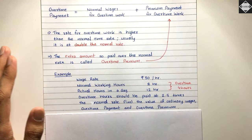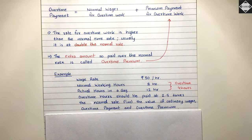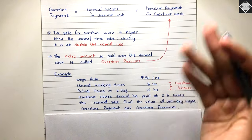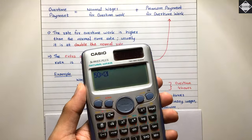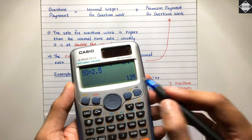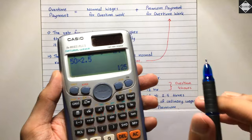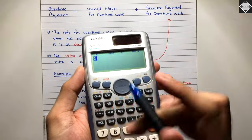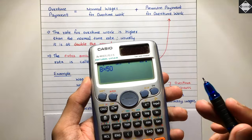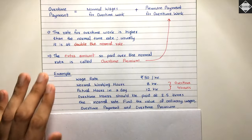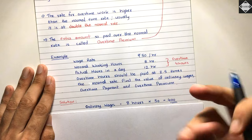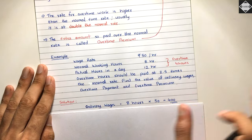The question says overtime hours should be paid at 2.5 times the normal rate. So for those four overtime hours, the rate would be 50 rupees multiplied by 2.5, which equals 125 rupees per hour. Now, ordinary wages are calculated as 8 hours into 50 rupees, which equals 400 rupees. That is the normal earning for the ordinary working hours.